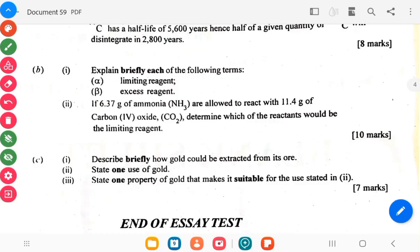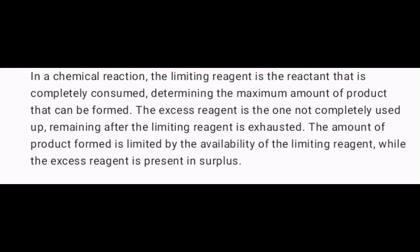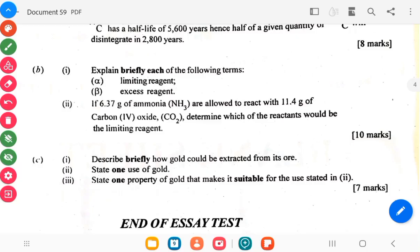Explain the following terms: limiting agent and excess reagent. If 6.37 grams of ammonia NH3 are allowed to react with 11.4 grams of carbon IV oxide CO2, determine which reactant will be the limiting reagent.